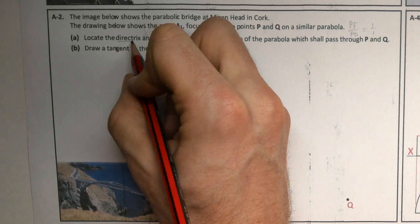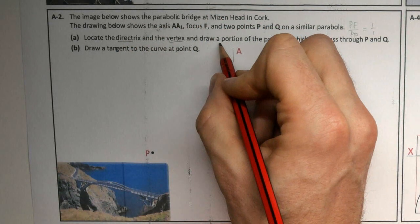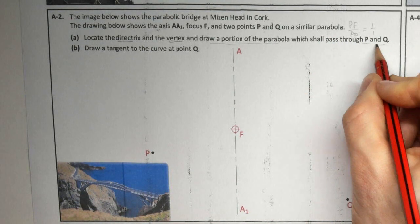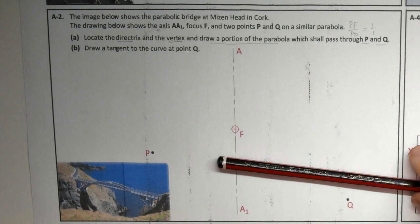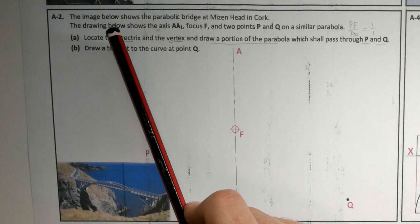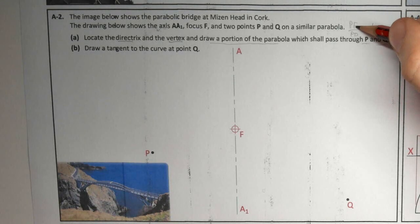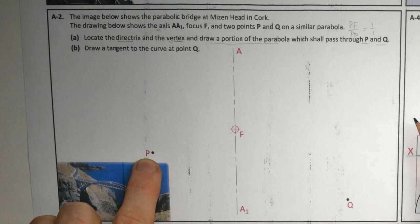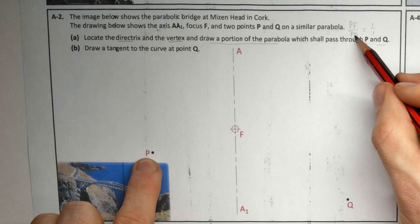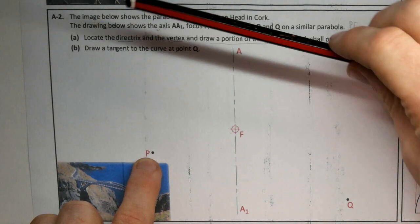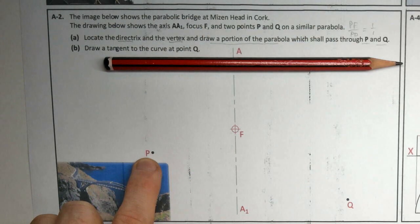Locate the directrix, vertex, and draw a portion of the parabola passing through P and Q. They tend to tell us the order in which we need to find things. So first off, we need to find the directrix. We know from the point to the focus, so from a point here to the focus and a point to the directrix.